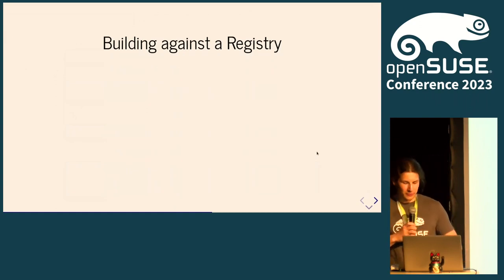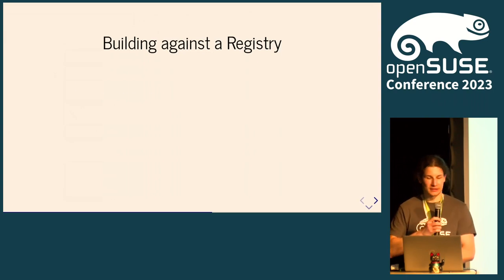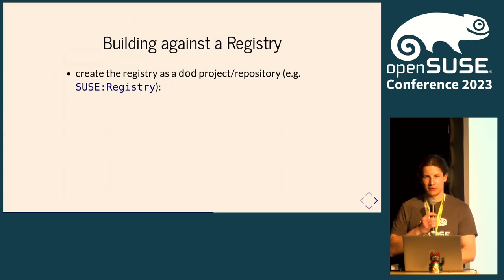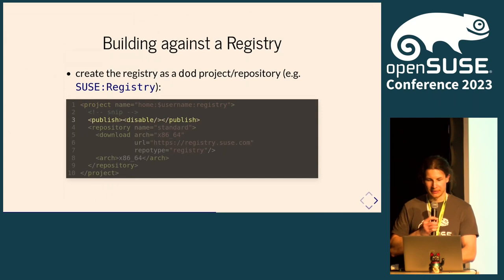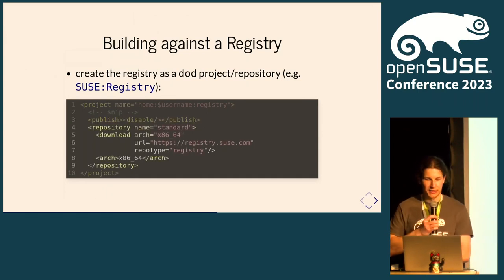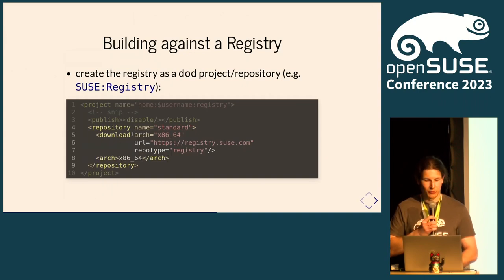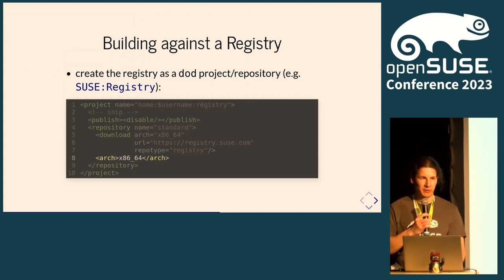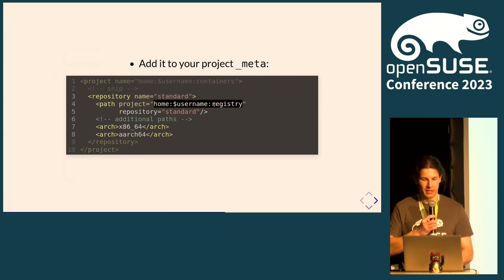If you want to build your container based on an external registry, OBS supports including registries via a Download-on-Demand (DOD) repository. There's an example on build.opensuse.org — the project SUSE:registry, which mirrors registry.suse.com. Important: please disable publishing on that DOD project — you don't want to republish someone else's registry. You create a DOD repository specifying architecture, URL, repo type 'registry', and include the arch element. You can add more of these for other architectures like ARM, PowerPC, and S390X, then include it in your project.